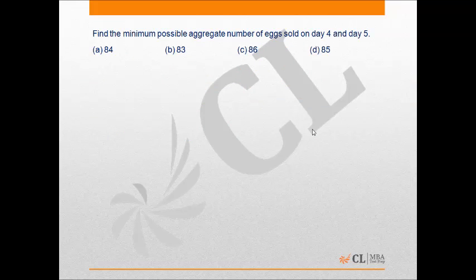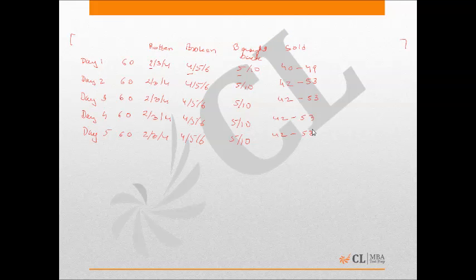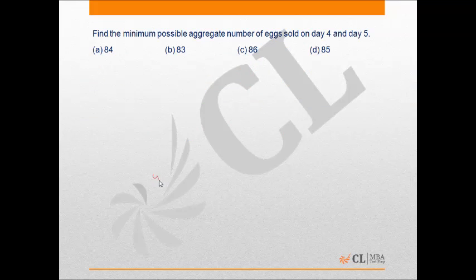To find the minimum possible aggregate of eggs sold on Day 4 and Day 5: the minimum on Day 4 is 42. If 42 are sold on Day 4, then 10 are brought back. Out of the 10, only 4 are usable for Day 5. On Day 5, out of 60 eggs, 4 are rotten, 6 broken, and 10 brought back — leaving 40 for sale, plus the 4 extra, giving 44 sold on Day 5. So the minimum aggregate for Day 4 and Day 5 is 42 + 44 = 86.